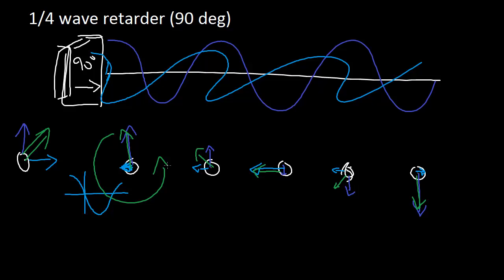So in this case, this time we're getting the right circular. And we can also get the left circular by, instead of retarding the horizontal, we can retard the vertical or we can advance the horizontal either way.